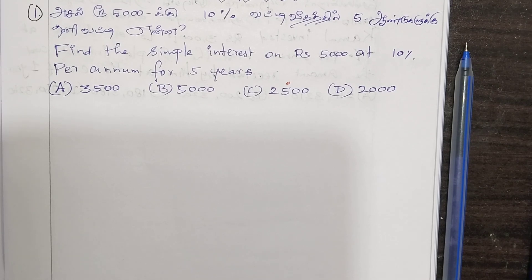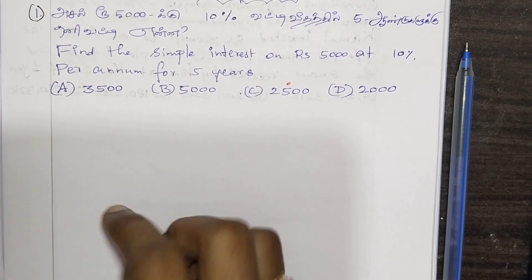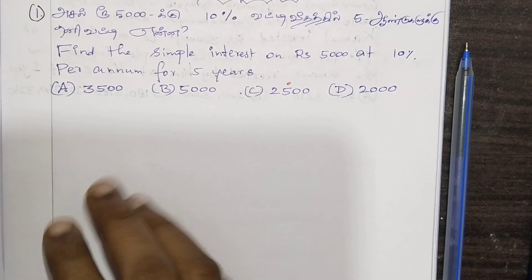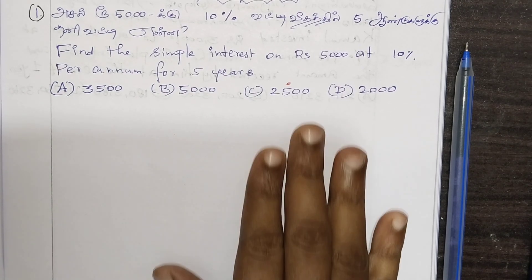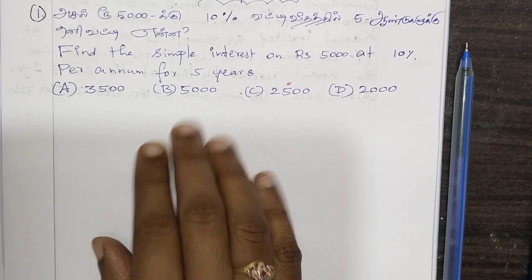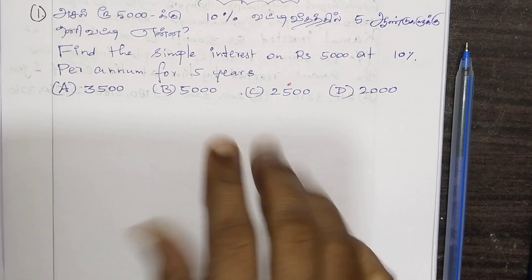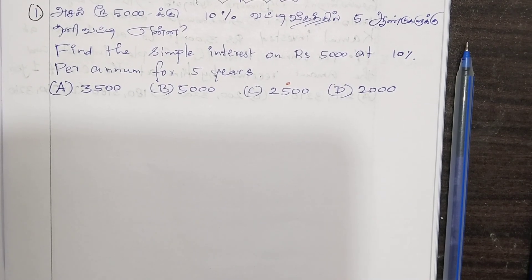Hello viewers, welcome to Deeps Mathematics 23. This is the Explanation Class, Day 4 and Day 5. This is the Tamil class, 300 batch.